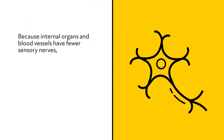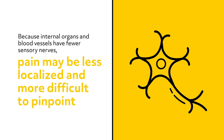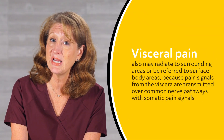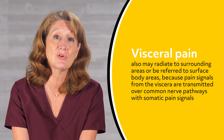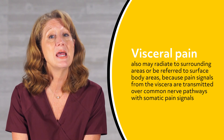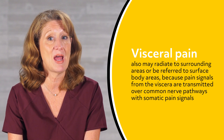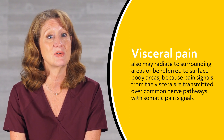Because internal organs and blood vessels have fewer sensory nerves, pain may be less localized and more difficult to pinpoint. Therefore, visceral pain is often described as dull and aching or as a vague discomfort and may become chronic. Visceral pain also may radiate to surrounding areas or be referred to surface body areas because pain signals from the viscera are transmitted over common nerve pathways with somatic pain signals.